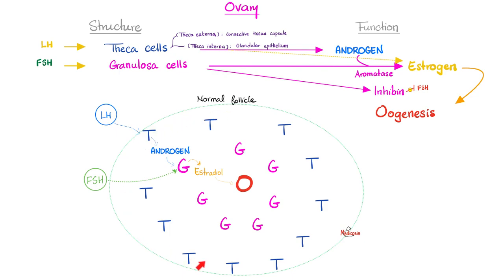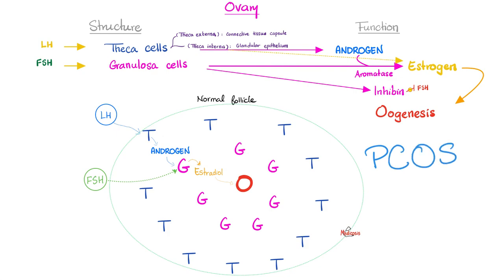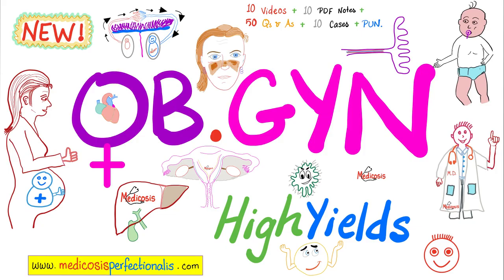Here is the difference between the theca cell and granulosa cell again. Do you know what the word theca means? It means near the wall. If you understood this diagram, you'll have no trouble understanding the pathogenesis of polycystic ovary syndrome.